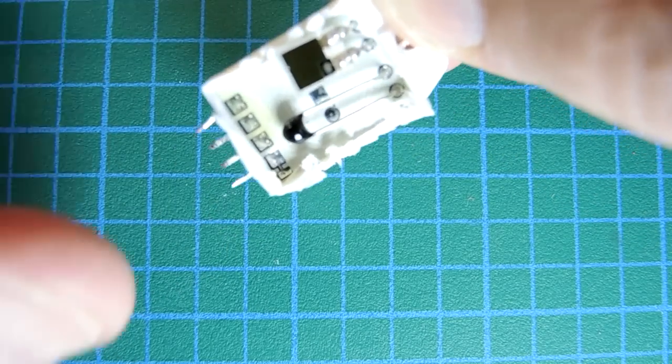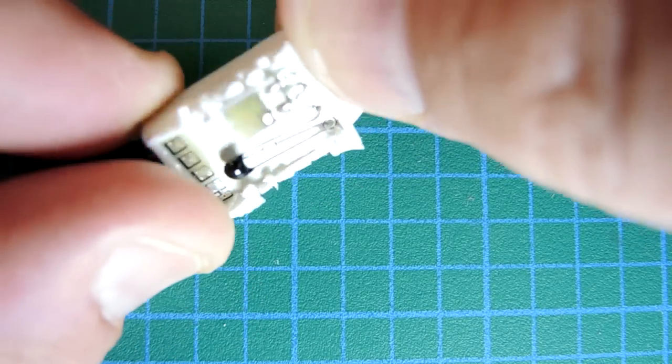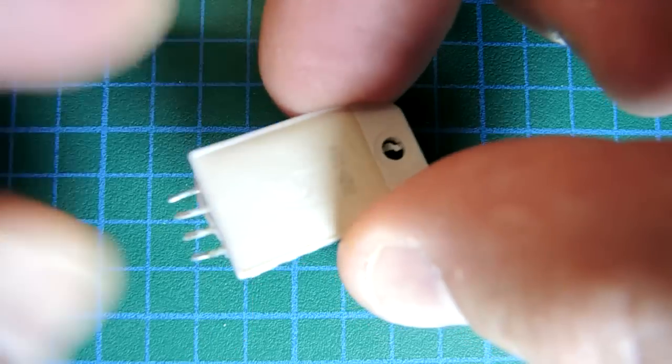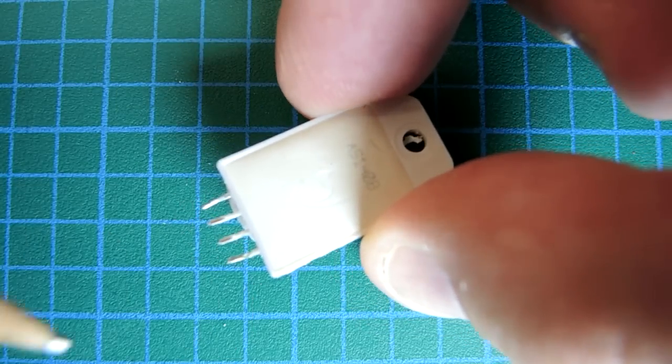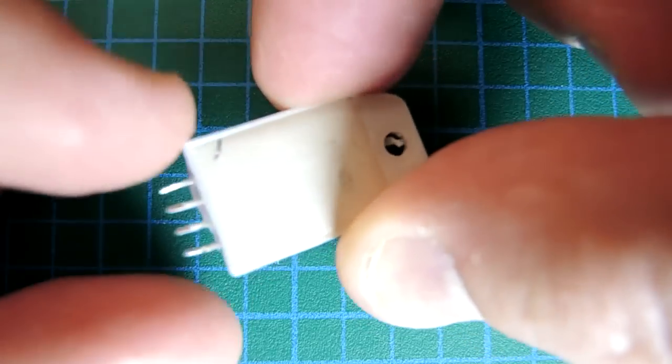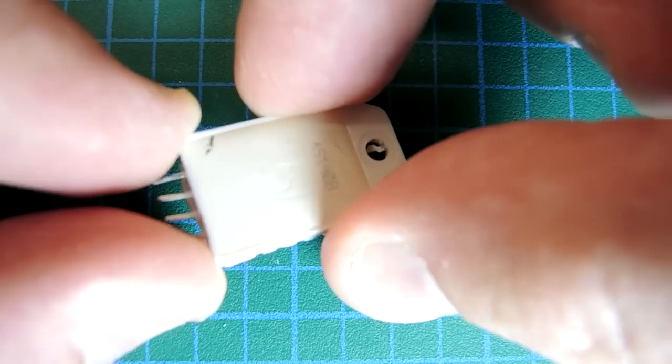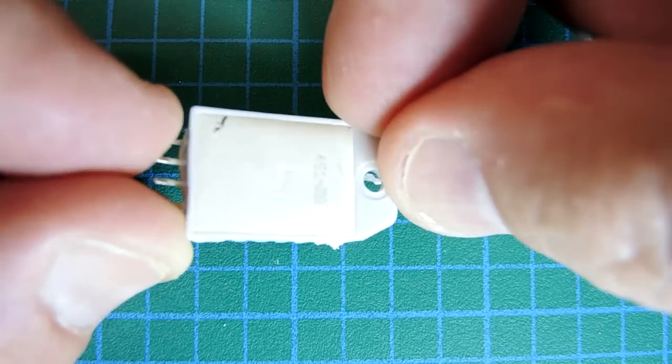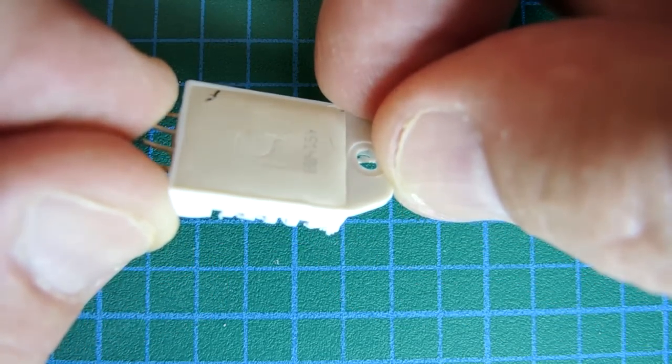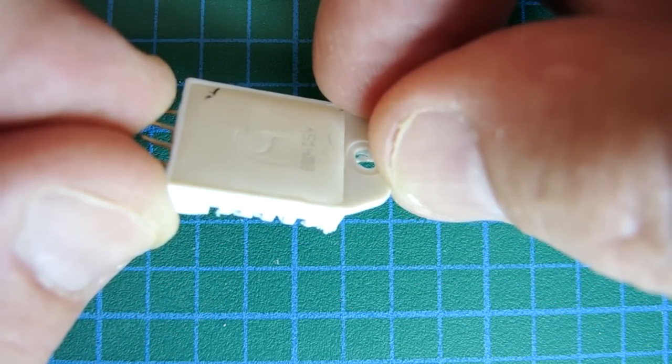They solder on the two sensors on one side and then pot the other side. So this potting unfortunately is not a reworkable type - it's obviously pretty hard. And realistically, acid de-encapsulation is going to be my best bet to extract the components on the other side and see what they look like.